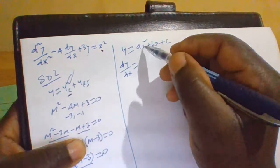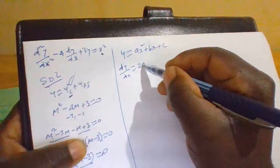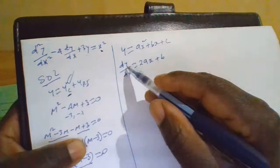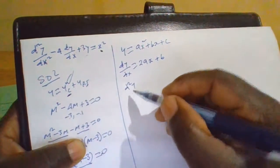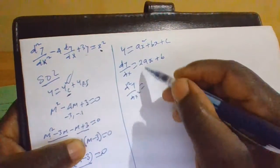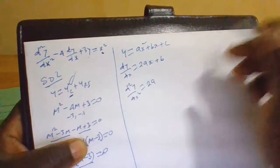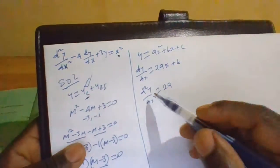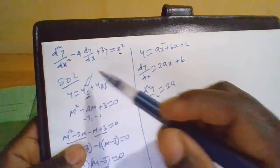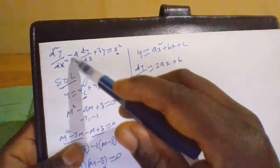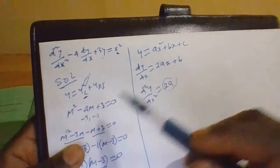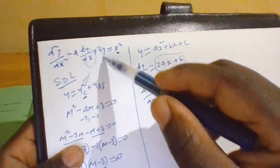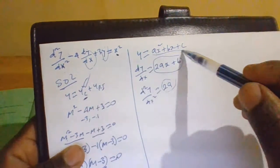Differentiating, dy/dx equals 2ax plus b. Differentiating again, d²y/dx² equals 2a. We now substitute these into the original differential equation, replacing d²y/dx² with 2a and dy/dx with 2ax plus b.